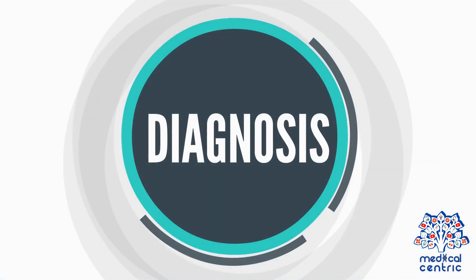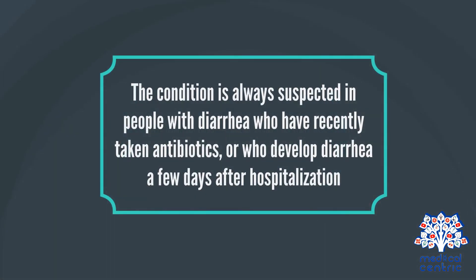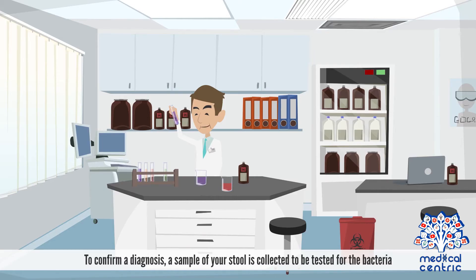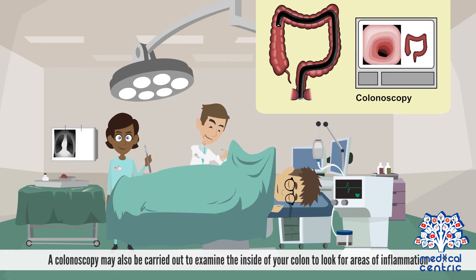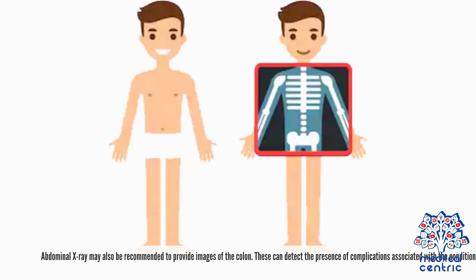The condition is always suspected in people with diarrhea who have recently taken antibiotics or who developed diarrhea a few days after hospitalization. To confirm a diagnosis, a sample of your stool is collected to be tested for the bacteria — either by testing for the toxins the bacteria produce or by detecting its DNA. A colonoscopy may also be carried out to examine the inside of your colon for areas of inflammation, and an abdominal X-ray may be recommended to provide images of the colon and detect complications.